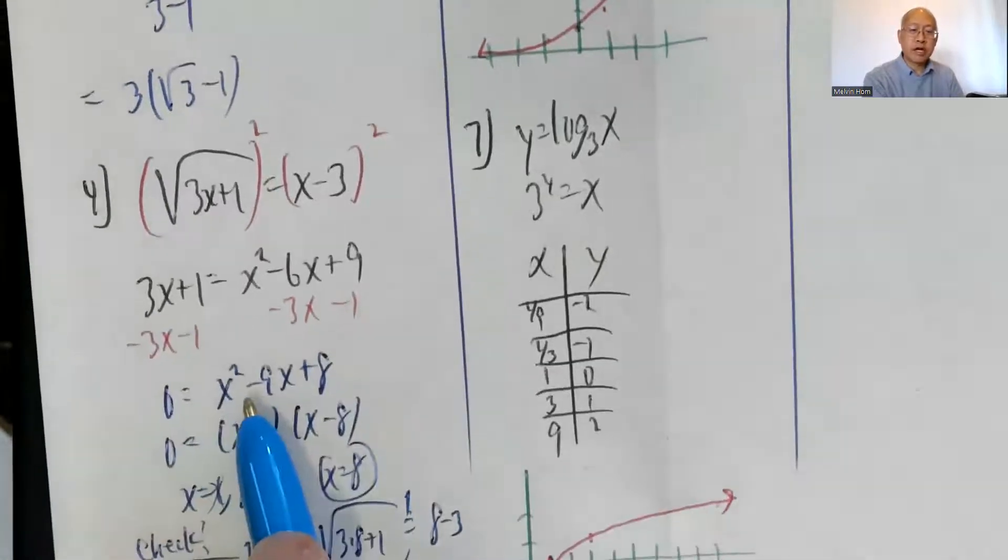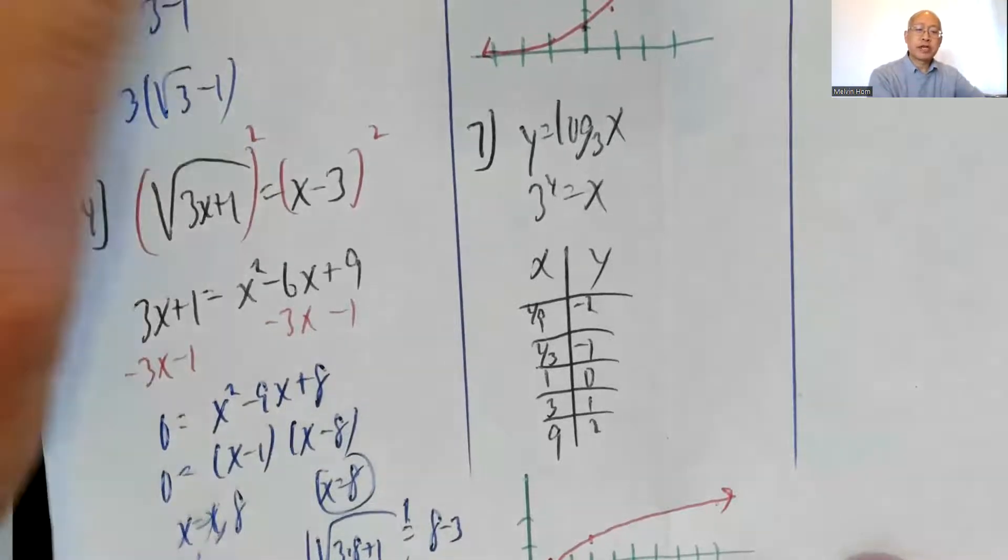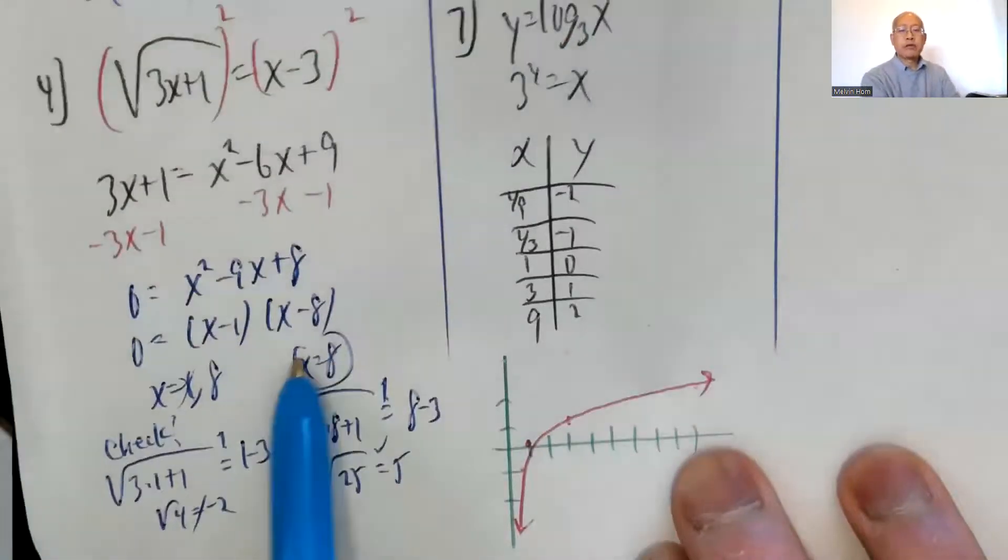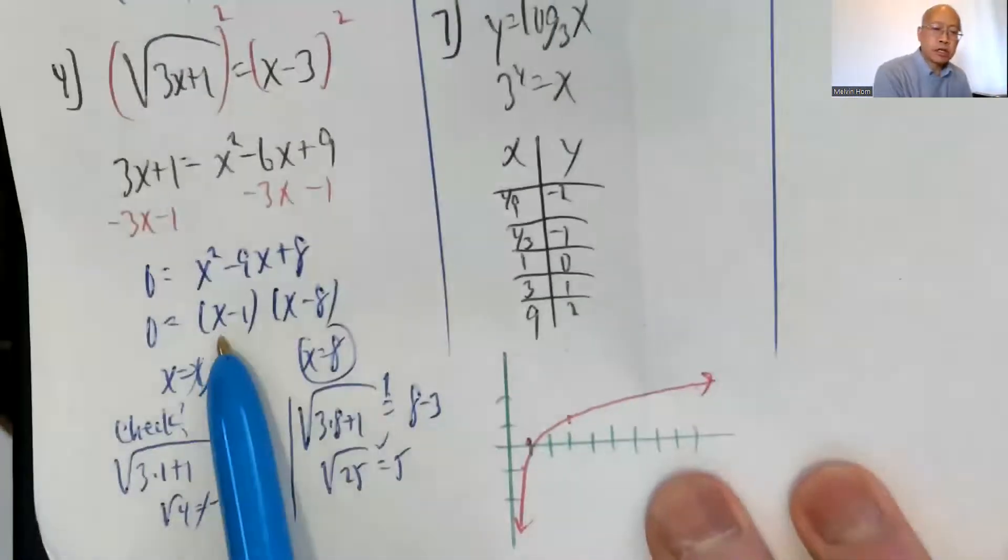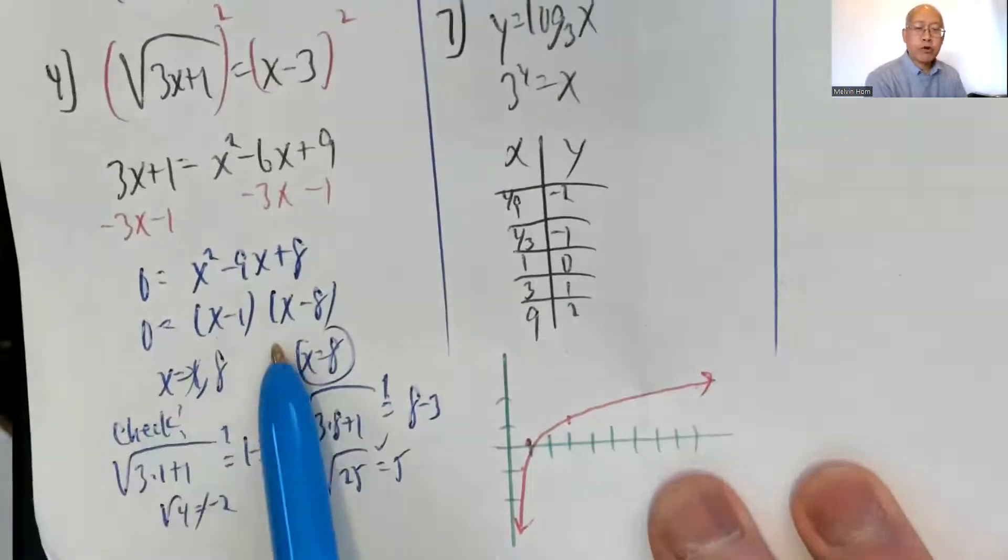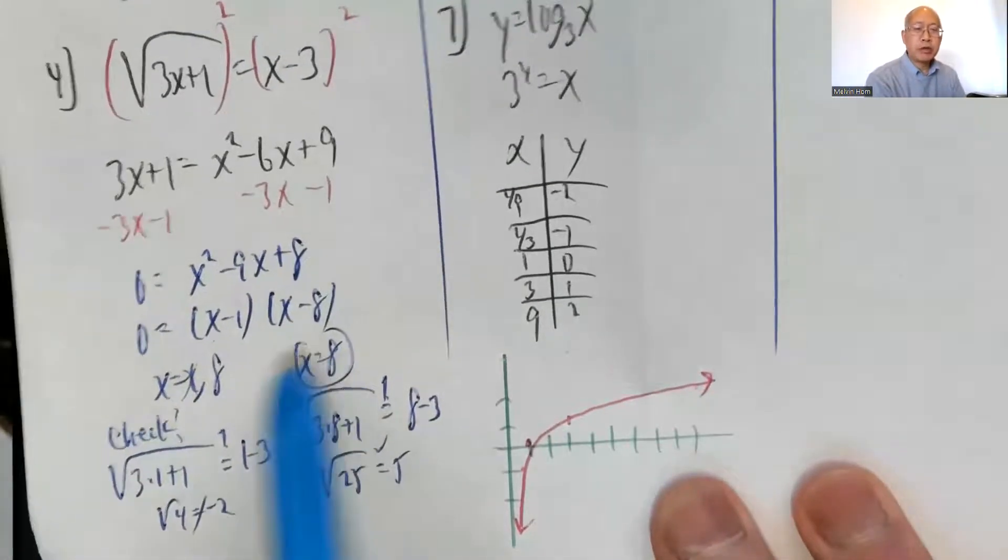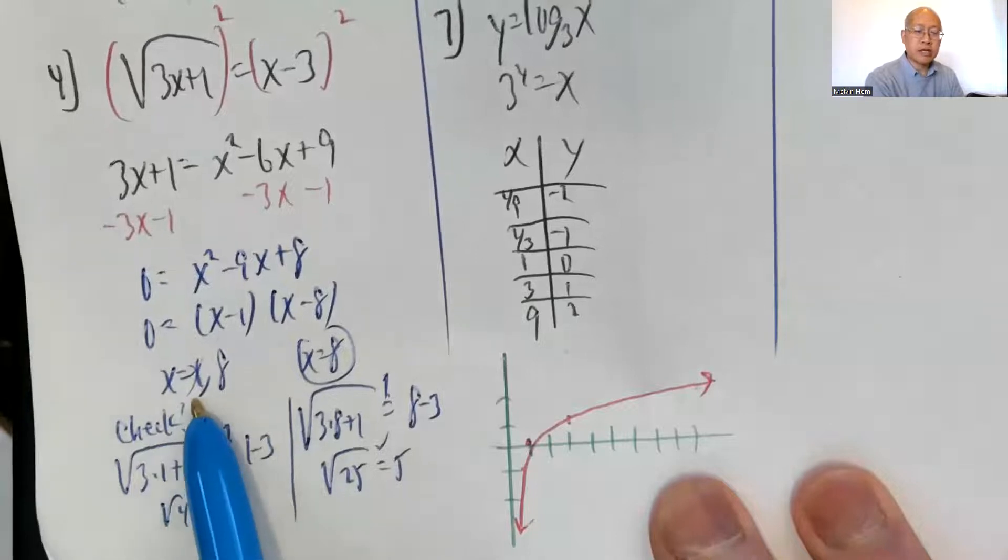So subtract 3x and subtract 1, so this will become 0. So 0 equals x squared minus 9x plus 8. This factors into x minus 1, x minus 8. So by the zero factor property, either this is 0, x is 1, or this is 0, x is 8. But if you check, 1 does not check.